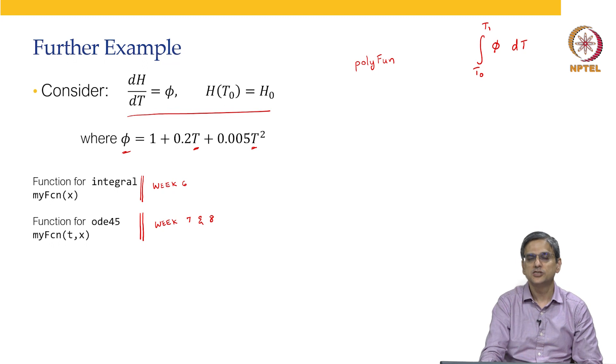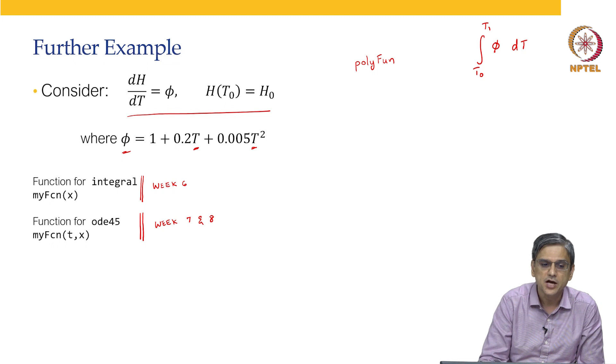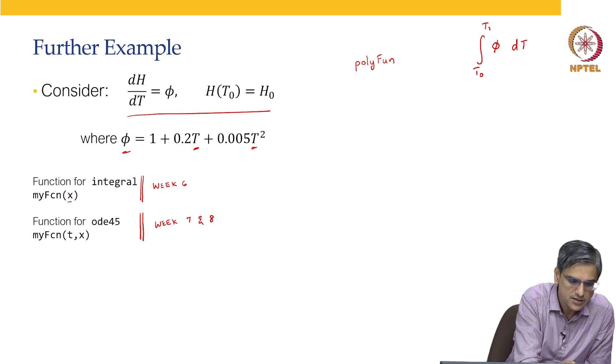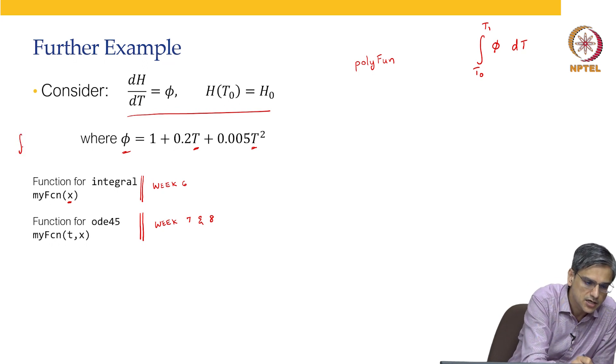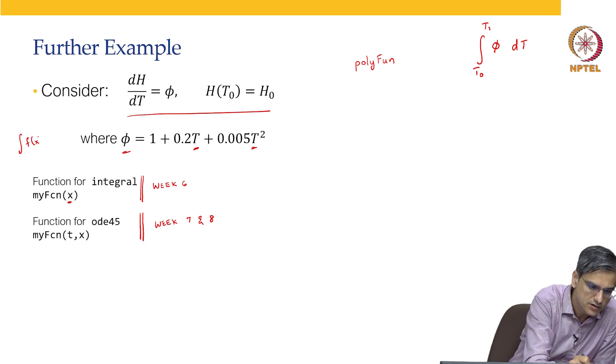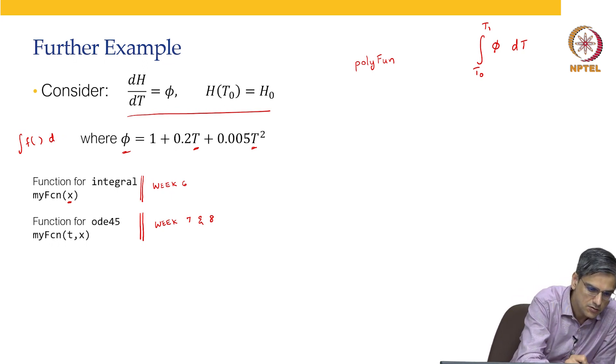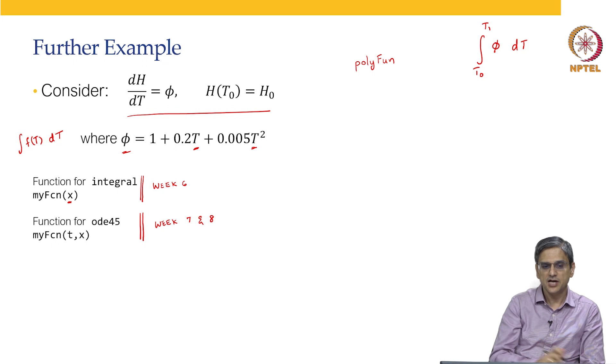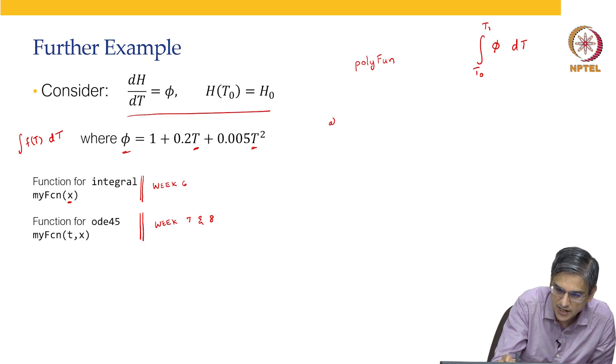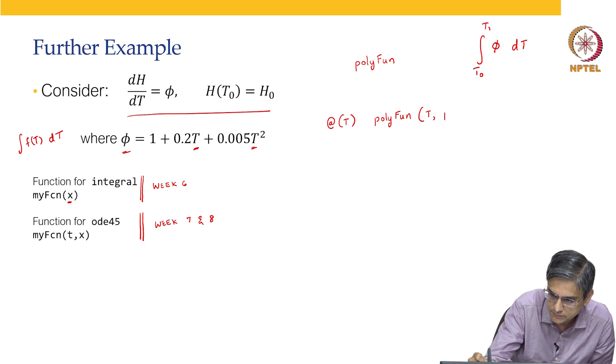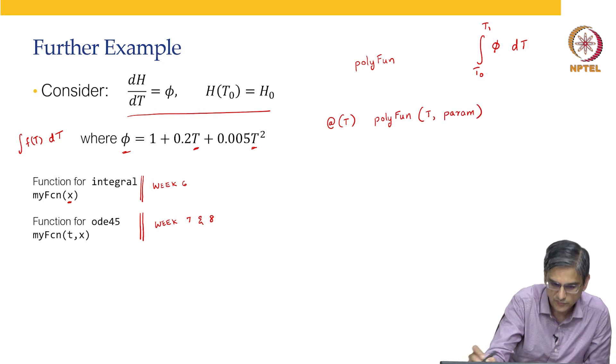However, let us continue and show you the power of using anonymous functions. What does integral expect? Integral expects a single variable and it will do integration of f(x)dx. That single variable x, as you realize, is a dummy variable and that particular variable was t. As a result we had written this as at t.